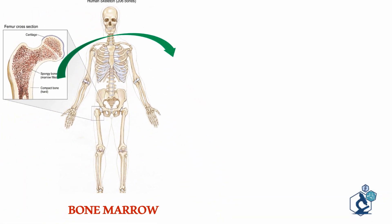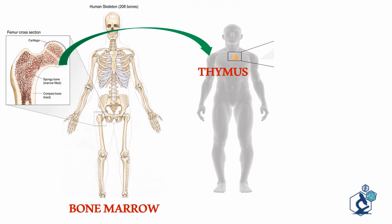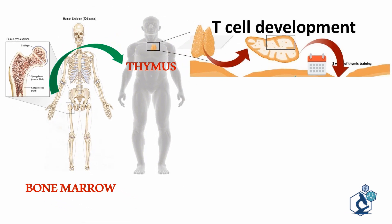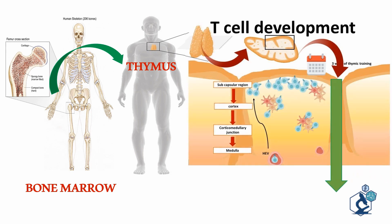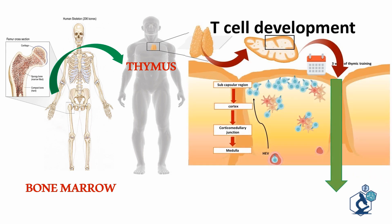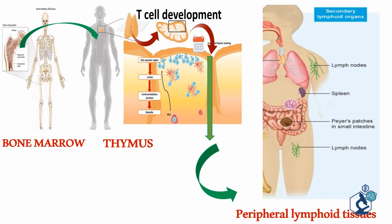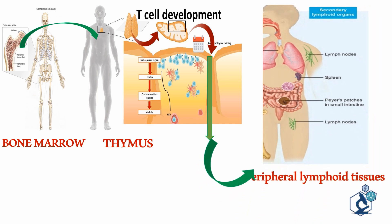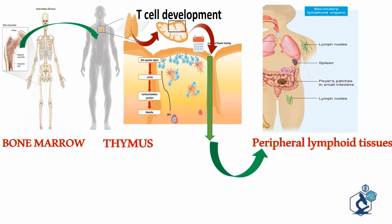T cell development begins in the bone marrow to form progenitor T cells, which then undergo maturation and acquisition of function in the thymus, and later in peripheral lymphoid tissues such as blood, spleen, skin, and mucosa.